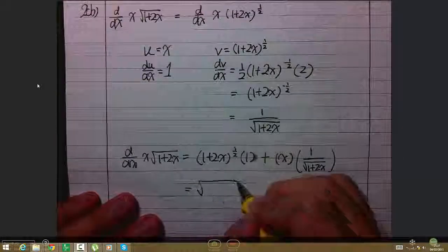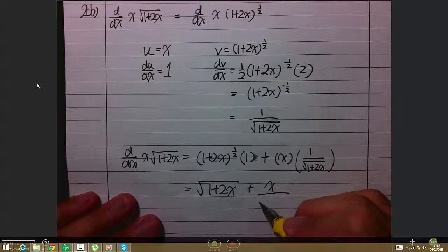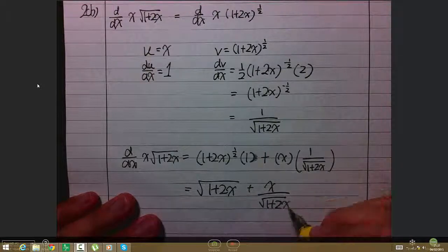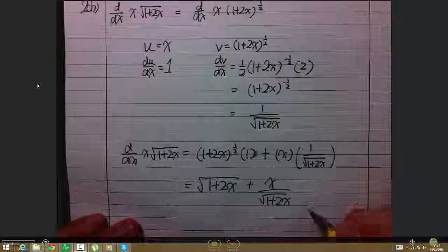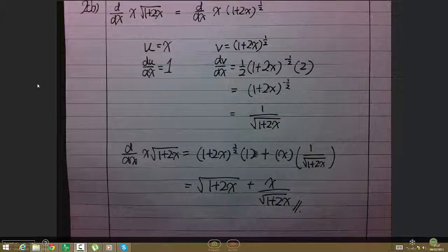This gives √(1+2x) + x/√(1+2x). And I'm done with question 2b. This concludes all my examples for Chapter 14.3.